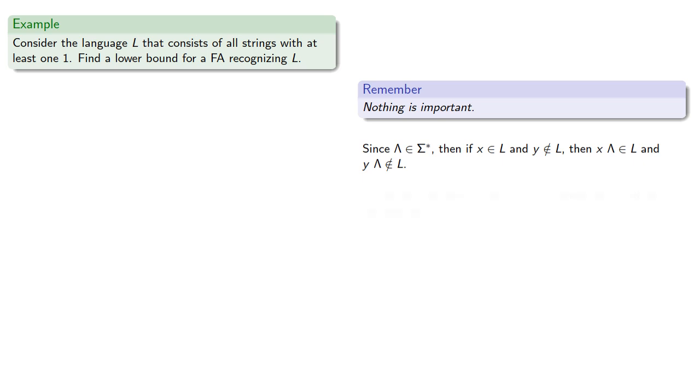So we can start our pairwise distinguishable set with an element of L and an element not in L. So we might begin with 0, which is clearly not in L, and 1, which is in L.